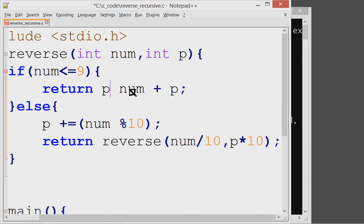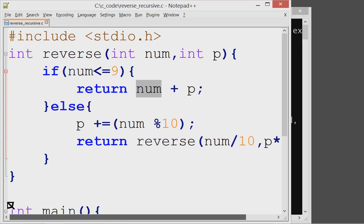You can also say here, remove this and just say return num plus p. I'll save this. And here the num is 2 and p is 430. So return value is 432.